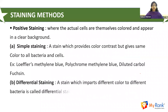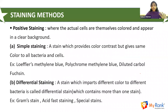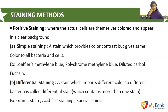Regarding positive staining and negative staining: in positive staining, the actual cells themselves are colored and appear against a clear background. Positive staining is categorized into simple staining and differential staining. A simple stain provides color contrast but gives the same color to all bacteria and cells. Examples include Loeffler's methylene blue, polychrome methylene blue, and diluted carbol fuchsin.